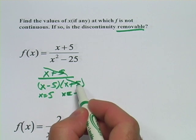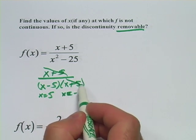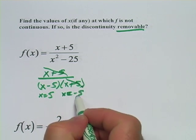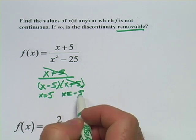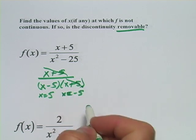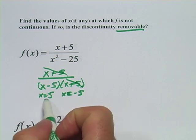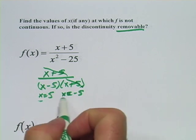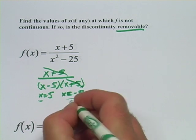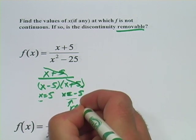It doesn't mean that this disappears. There's still a discontinuity at x equals negative 5. It's just that it's not an asymptote. It becomes just a hole in the graph. So what we would say is that there are discontinuities at x equals 5 and x equals negative 5, and this one is removable.